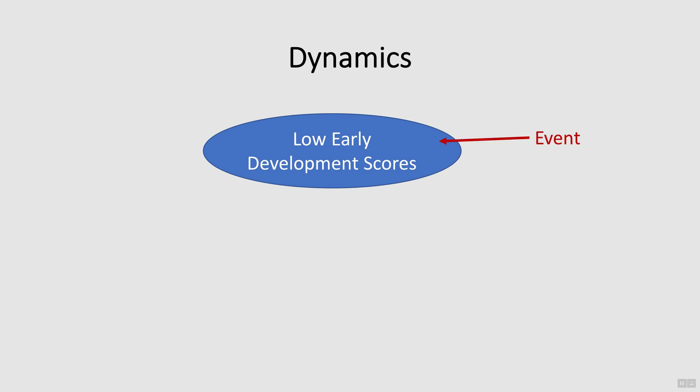In our case study, the Executive Director of the Neighbourhood House first suggested that the problem was low early development indicators. However, this was really more of an event that brought awareness to the problem. The event is a result of a pattern in the system, which is created by a system structure.